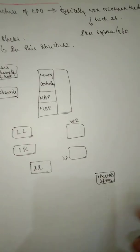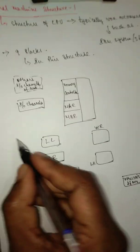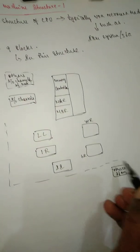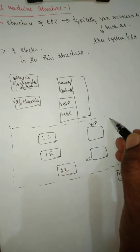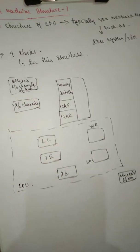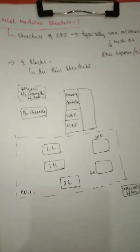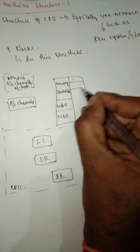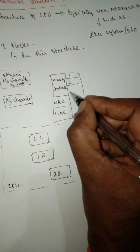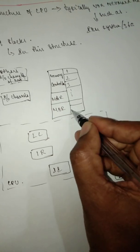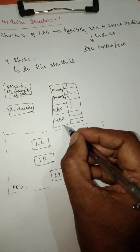They are connected to the main system, and this block — the CPU block. Now let us try to analyze the relationship between each and every module. Here you have N number of memory locations, which are used for specific purposes.